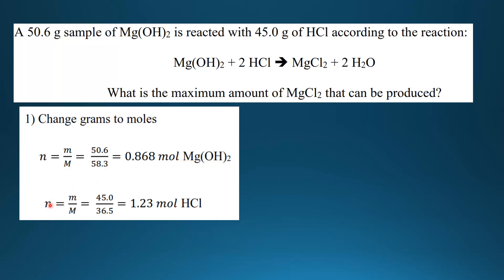Next we do the hydrochloric acid using the same equation. 45.0 g divided by the molar mass of hydrochloric acid, which is 36.5, gives us 1.23 moles of hydrochloric acid.